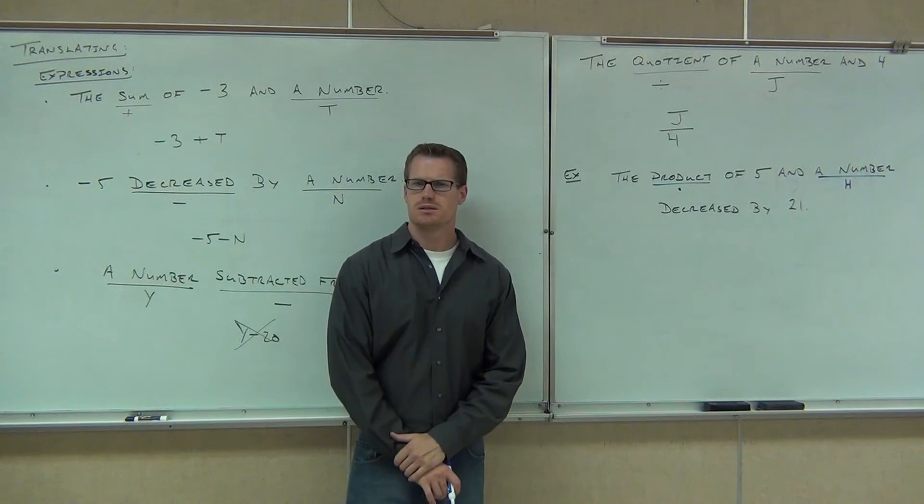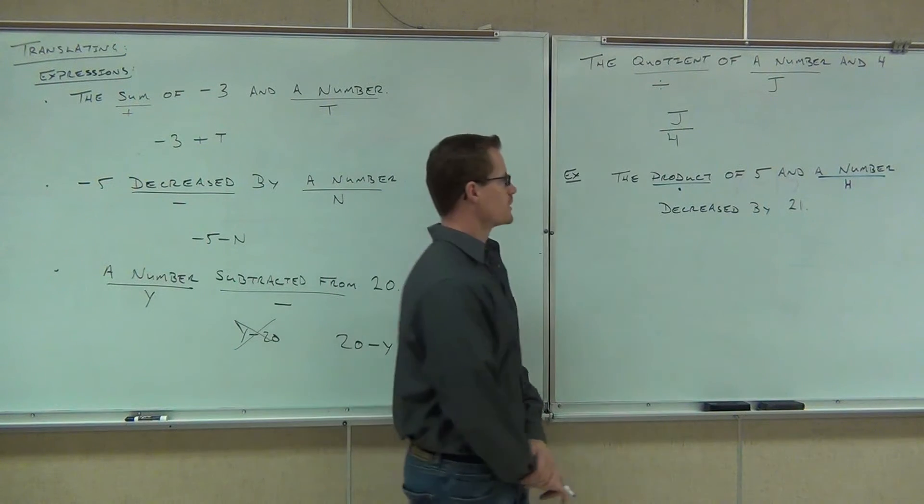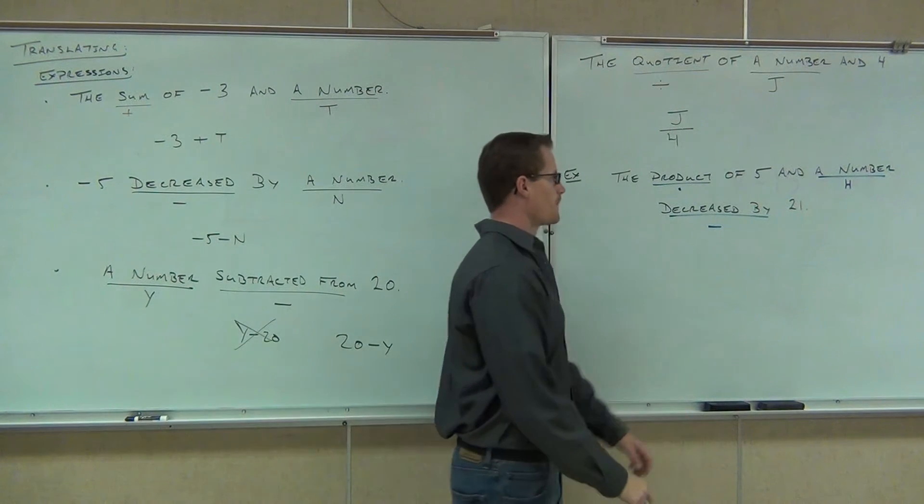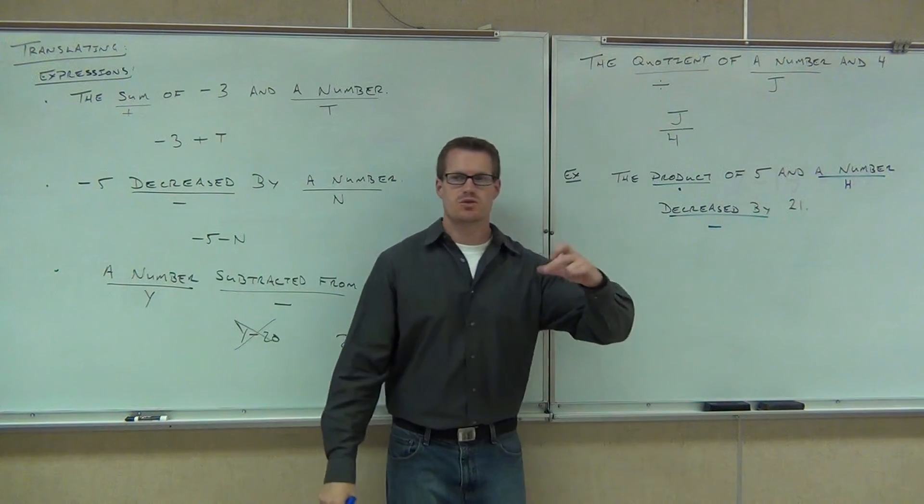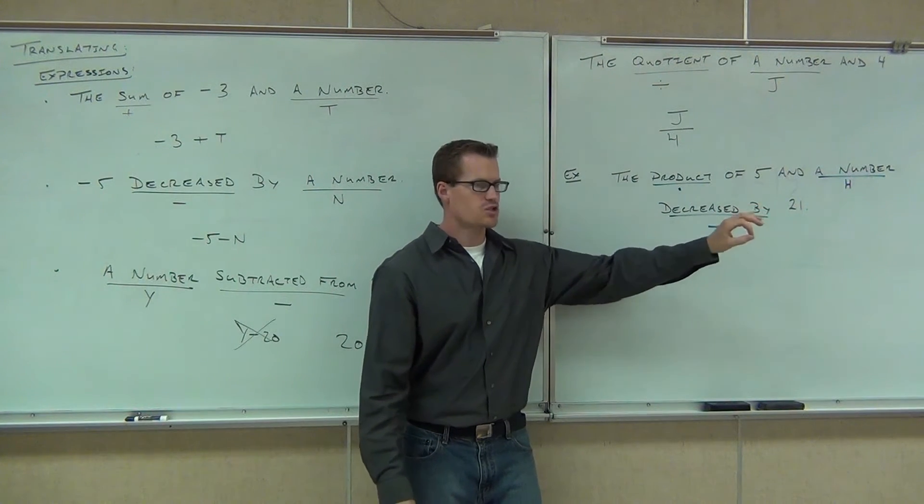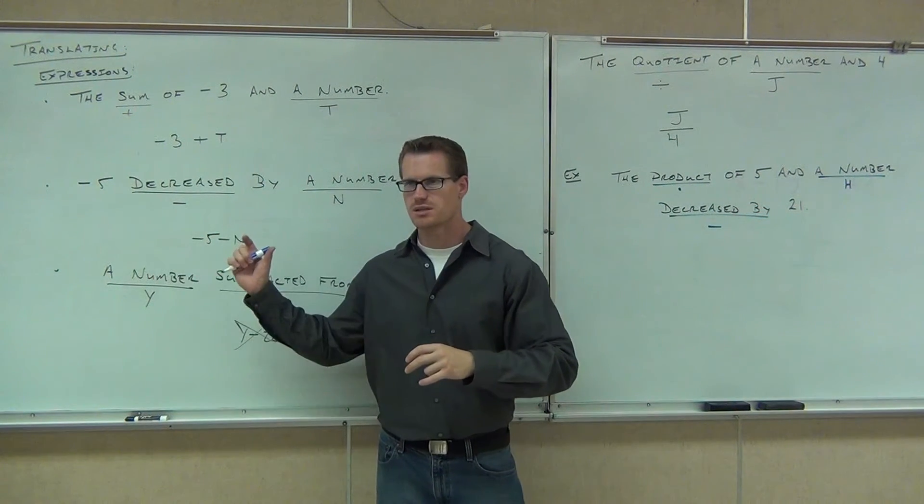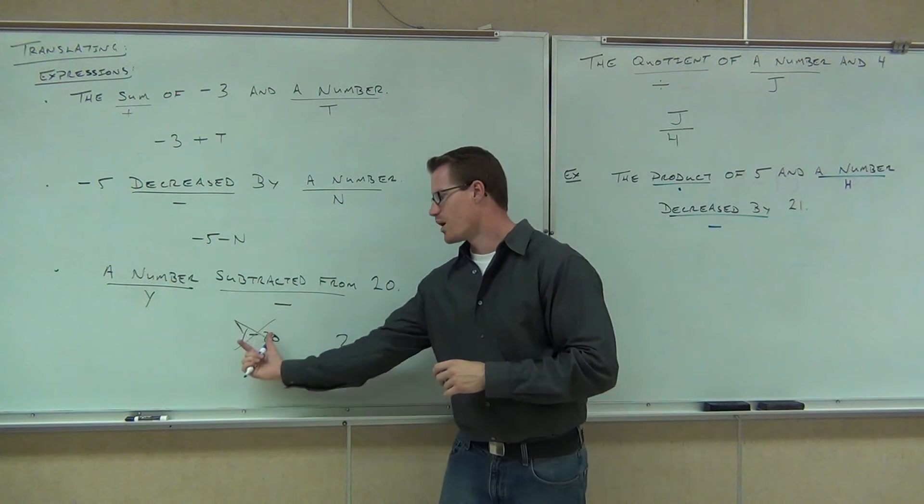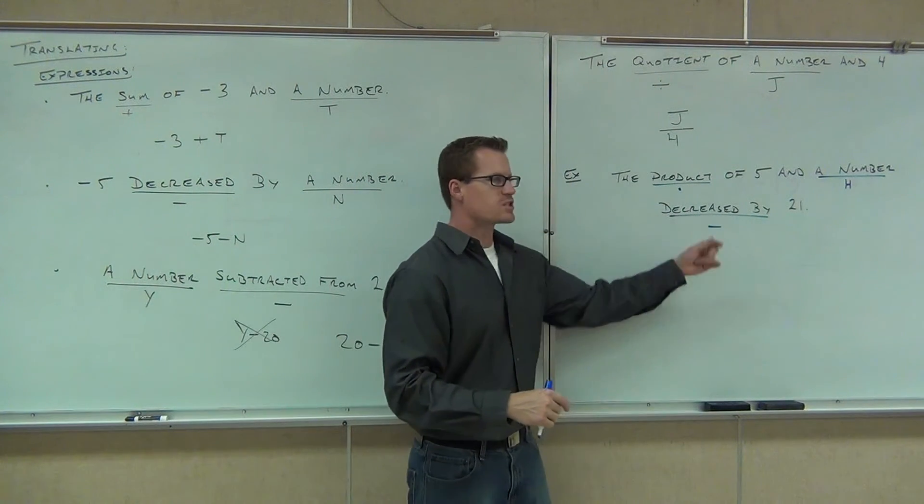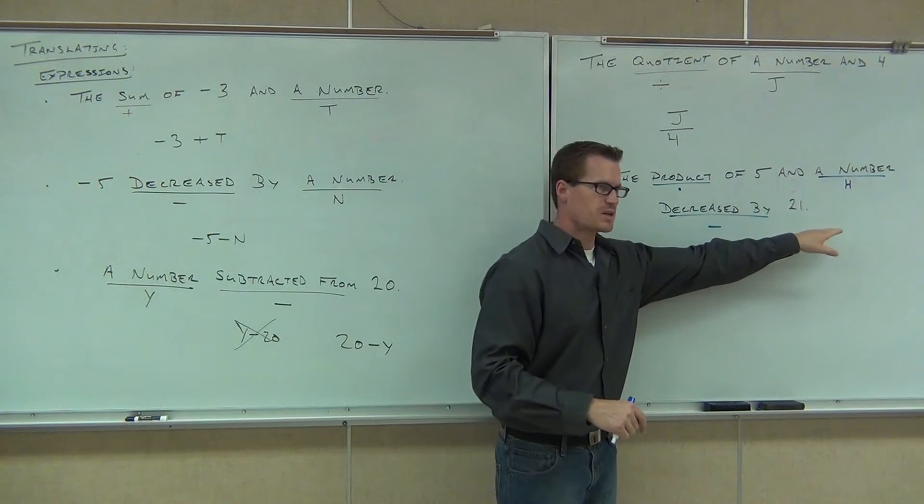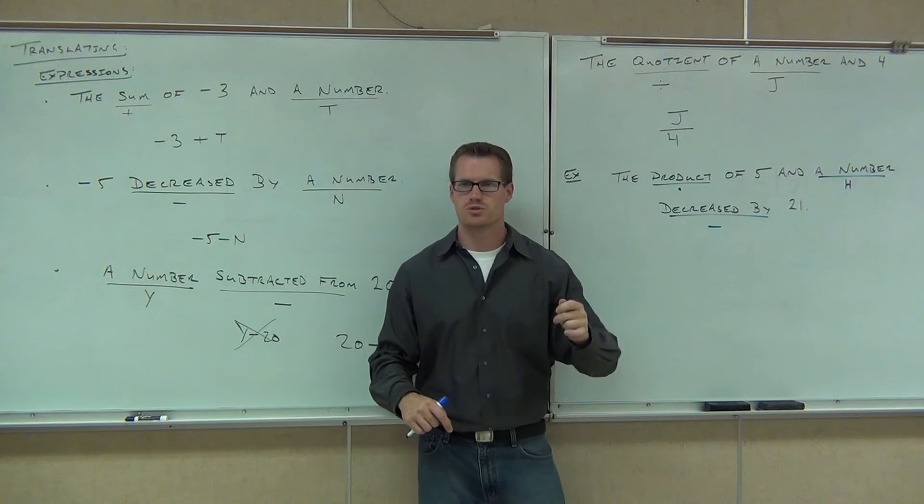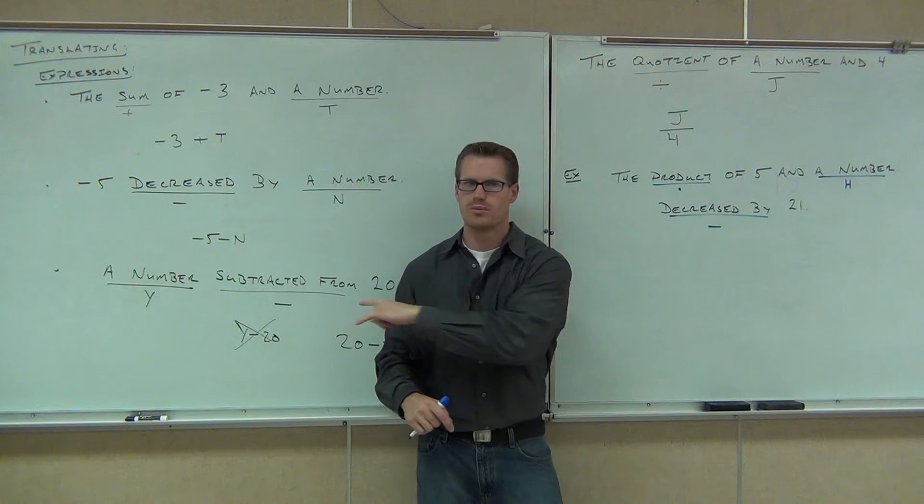What else needs to be underlined? Decreased. Decreased by, okay. What's decreased by mean? Subtracted from. Decreased by does not mean subtracted from. Decreased by means minus the rest. Subtracted from would be written at the end of our sentence. This would be a number subtracted from would be like y minus. It would be 20 minus y. Subtracted from 20. Decreased by, this states what it's being decreased by. It's being decreased by 21. So whatever we're going to have, we're going to subtract 21 from it.